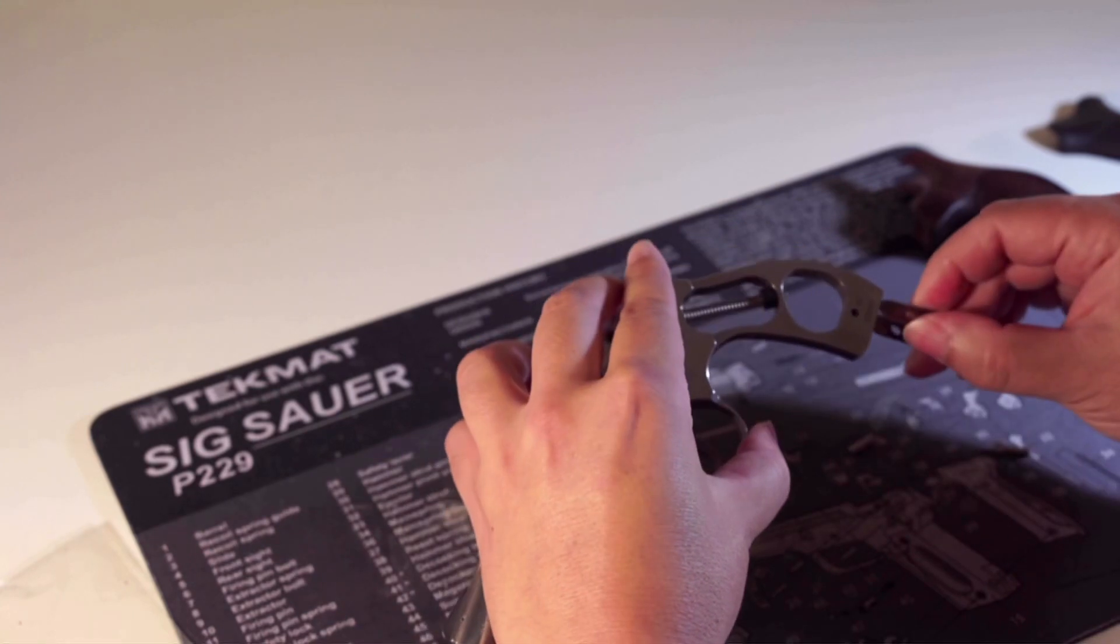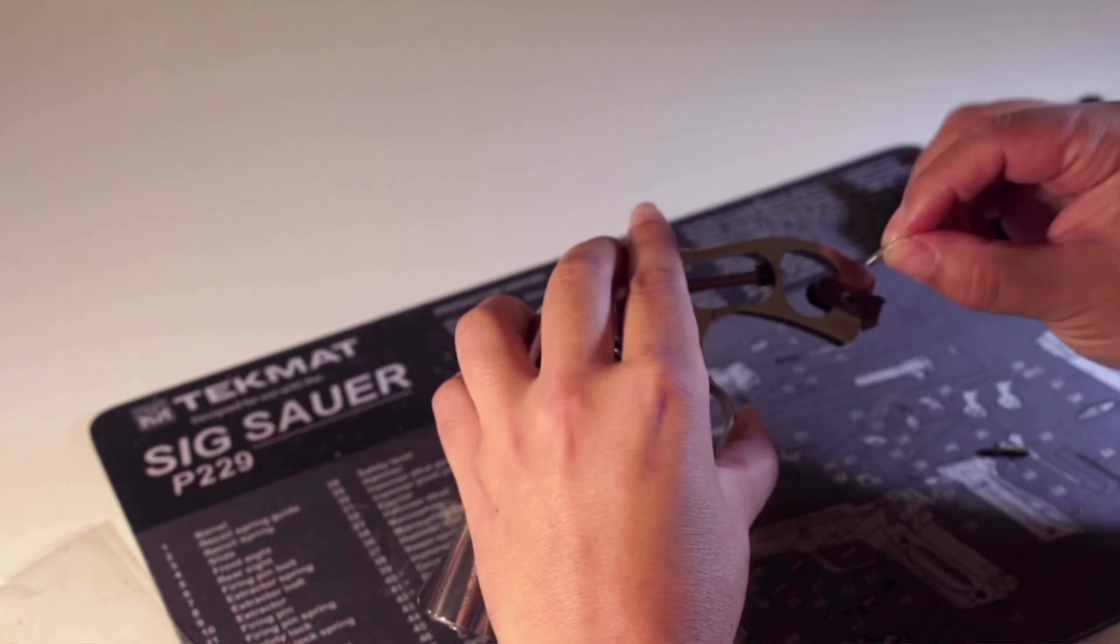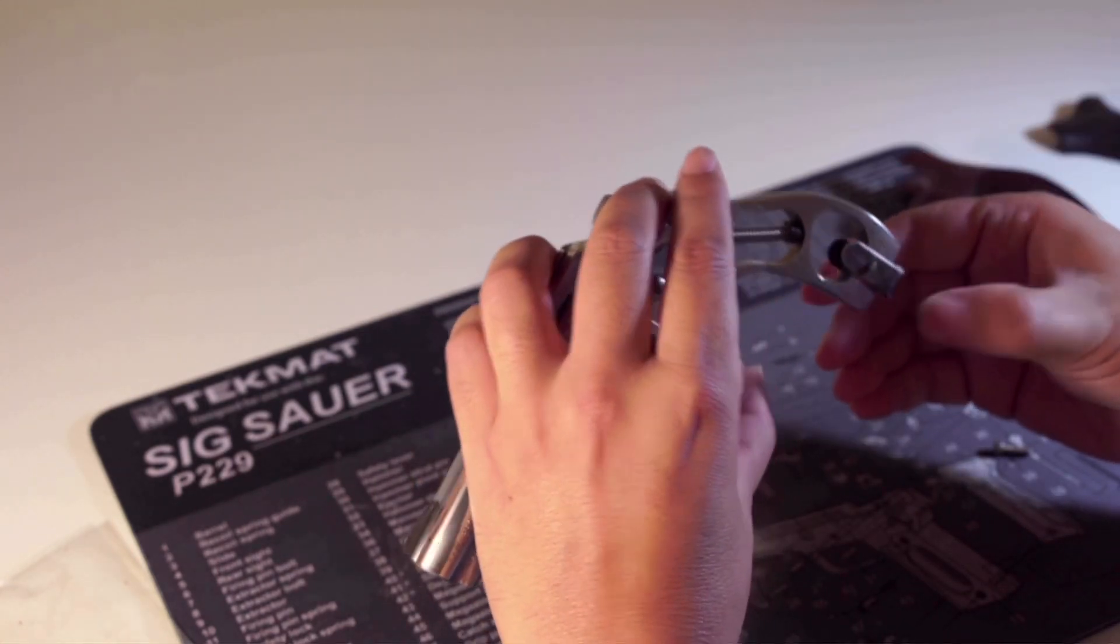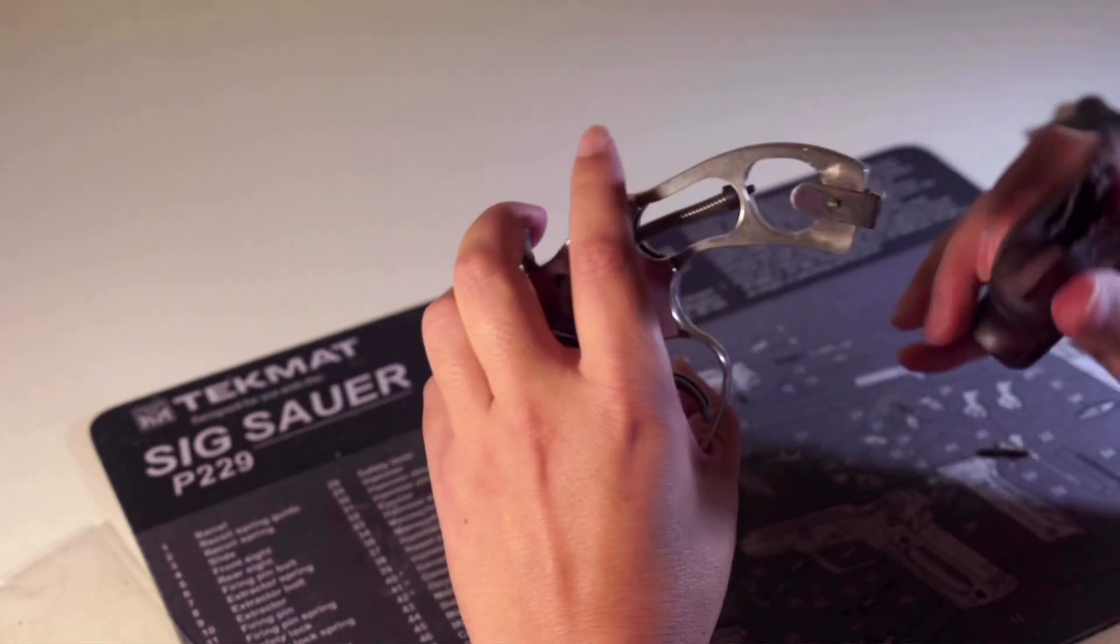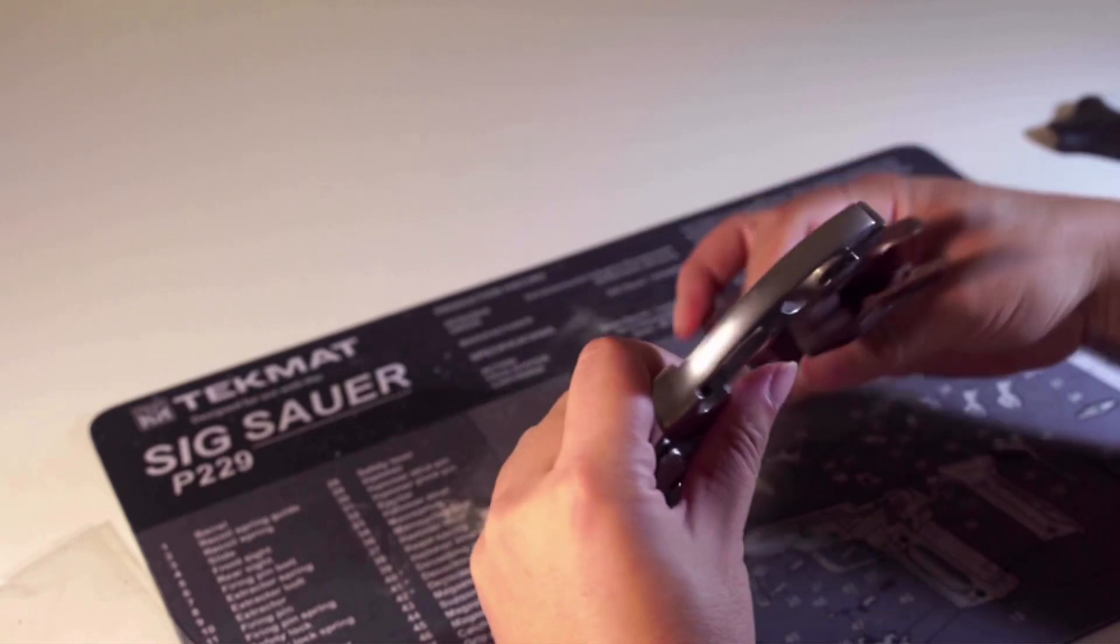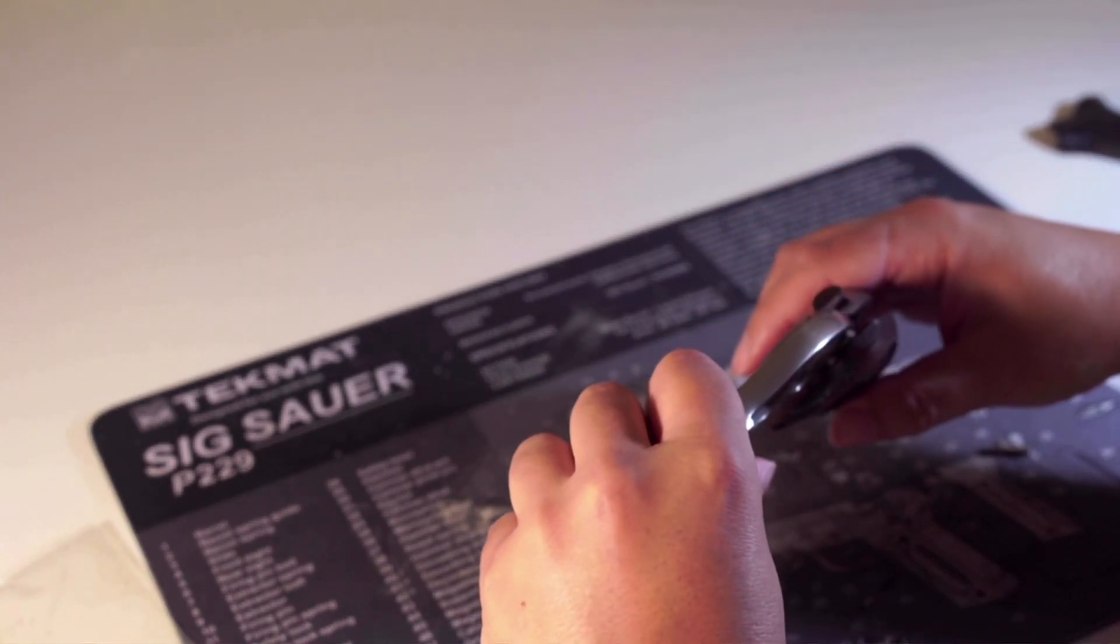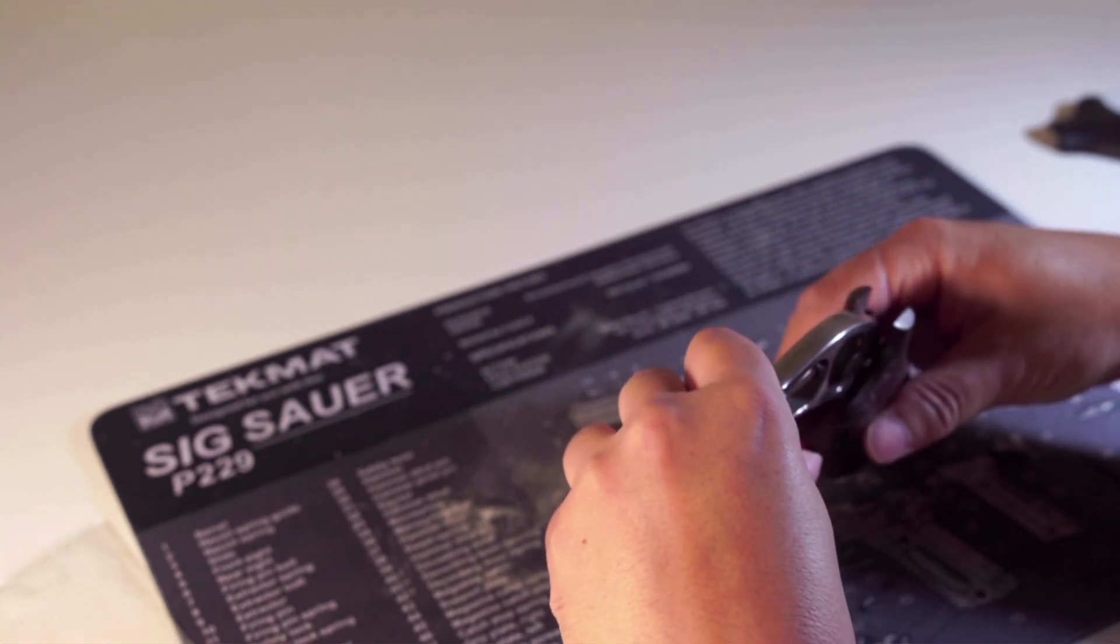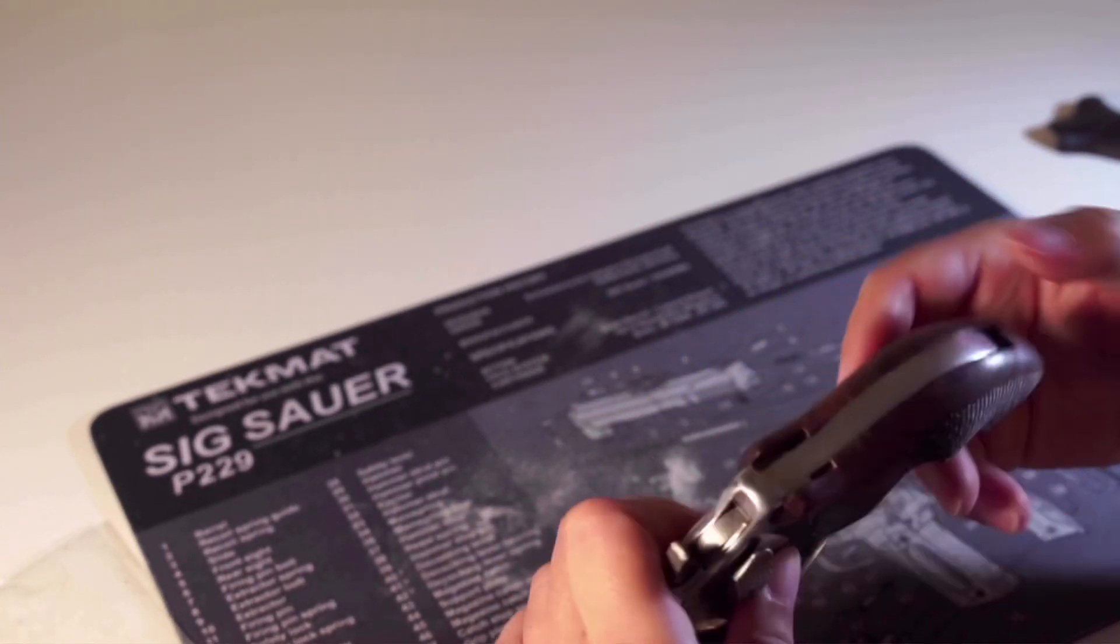Actually, it will be easier to align the holes first and then put in the pin. Okay, now find the grooves in the Hogue grip. Because it's one piece, so you have to slide in through the grooves. Push all the way in and feel the snap.